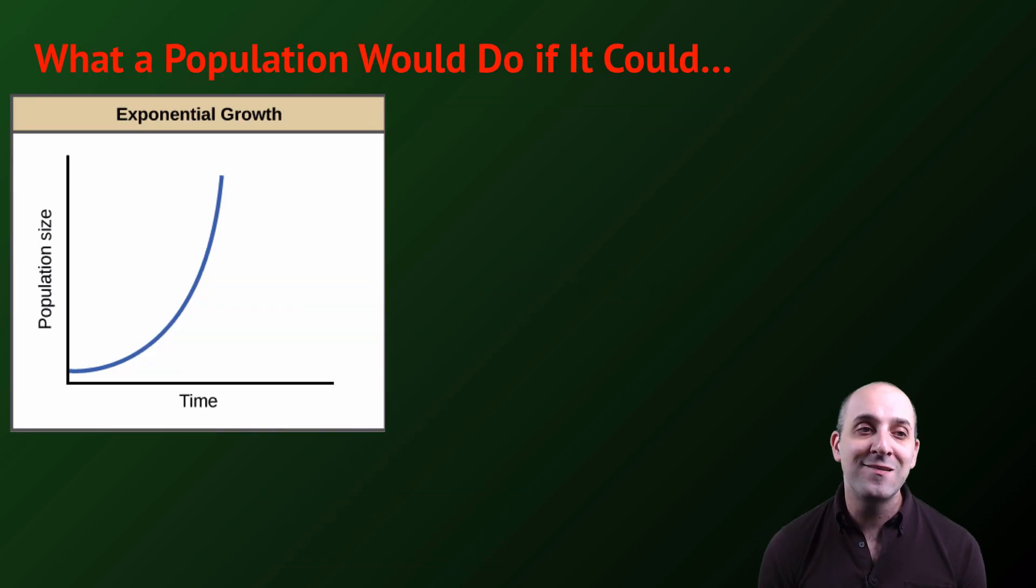The first is the exponential growth model, what a population would do if it could. If every member of a population successfully reproduces, over time, the number of individuals will increase, but it will not be a linear increase. If the reproduction is a doubling, one individual will become two, two will become four, four will become eight, and so on and so on.